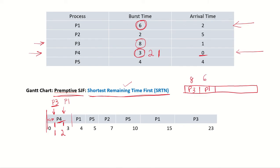At time 3, P4 completes its CPU burst and is out of the system. Out of the remaining processes in the ready queue, the burst time of P3 is 8 and the burst time of P1 is 6. So P1 is given the CPU and P1 starts running.